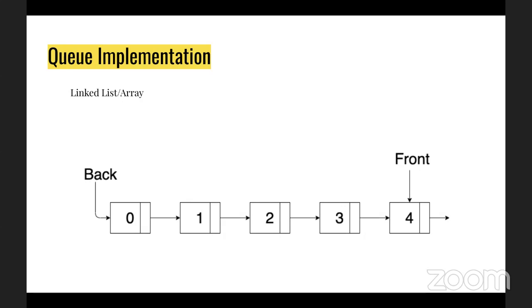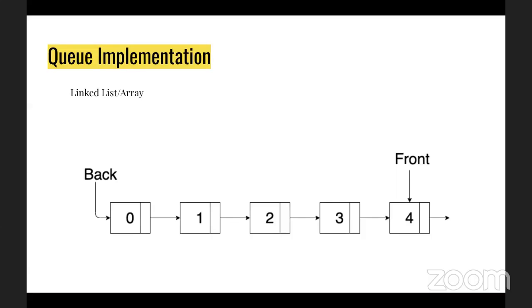In Redis, there's a data structure called a List which can be used as a queue without much additional work. You can use the Redis List to implement any sort of queue, including a double-ended queue where you can enqueue and dequeue from both ends.